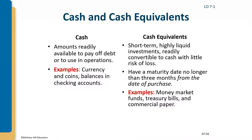Cash is the amount available to pay off debts or use in operations — our currency and coins, balances in checking accounts. We also have cash equivalents, which are short-term, highly liquid investments readily convertible to cash with little risk of loss. The maturity date is no longer than three months from purchase. Money market funds, treasury bills, and commercial paper are common cash equivalents.